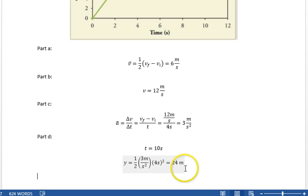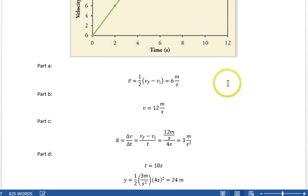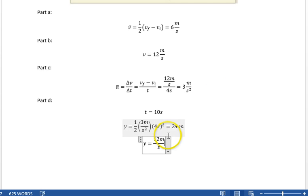It goes 24 meters. And then, during the last part of the race, he goes, he's going 12 meters per second. And he does this for 10 minus 4 is 6, 6 seconds is 72 meters.